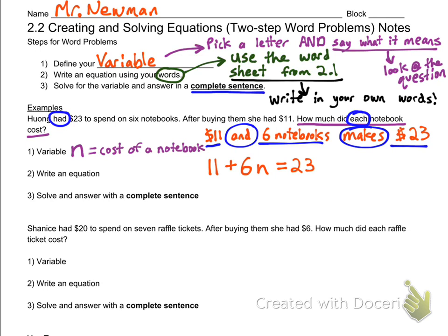There's our equation: $11 and six notebooks should equal $23. Let's solve it. Subtract 11 from both sides and divide by six, and we get N equals 2. That means $2, so each notebook costs $2. You should write that out as a sentence. Check and make sure it makes sense. If each notebook is $2 and we're buying six of them, that's $12 of notebooks. $12 and $11 makes $23, so that makes sense.